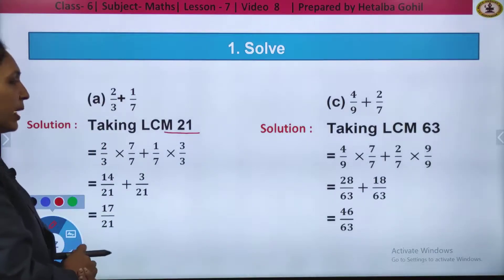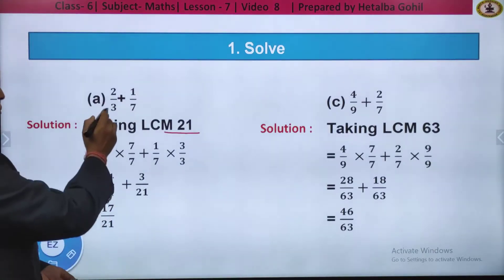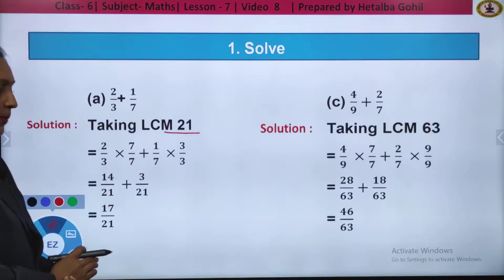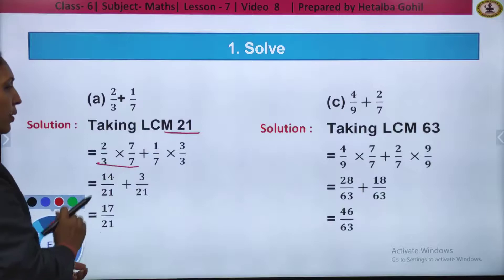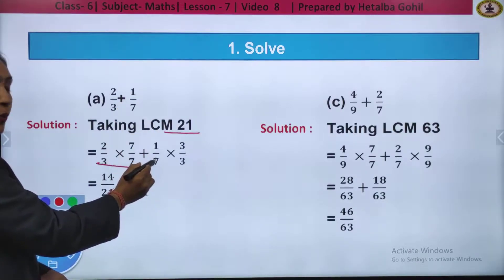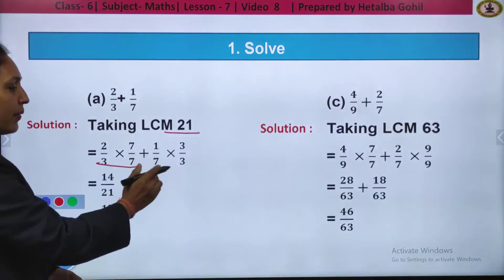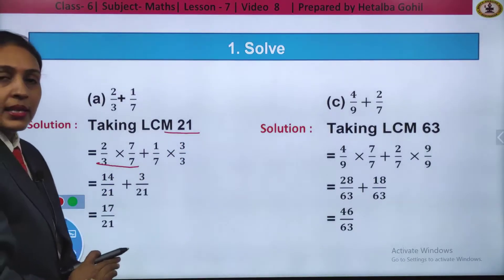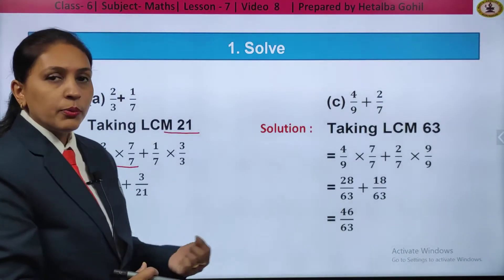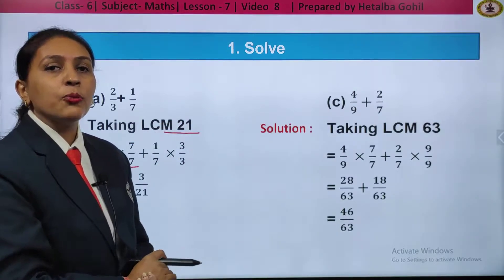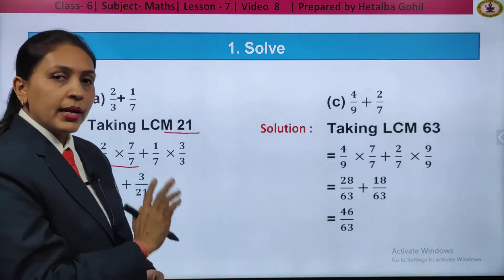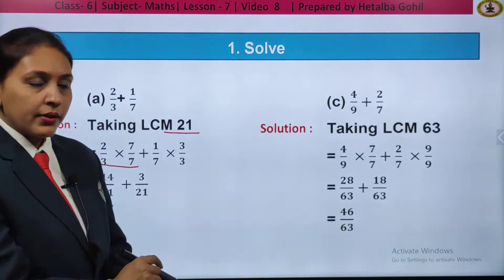Now, changing the denominators with 21. For 2 by 3, I will multiply 7 by 7. You can see 2 by 3 into 7 by 7, plus 1 upon 7. As the denominator is 7, to get 21, I have to multiply 3 by 3. Remember: whatever number you multiply to the denominator, the same number you have to multiply to its numerator. You have to get the equivalent fraction.